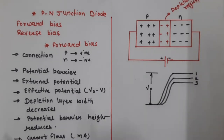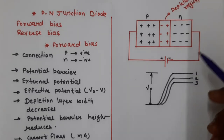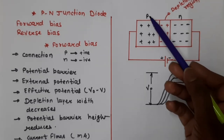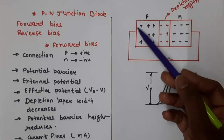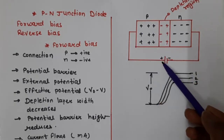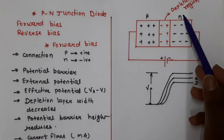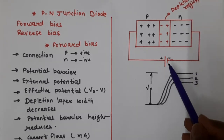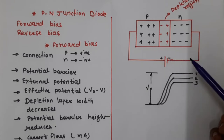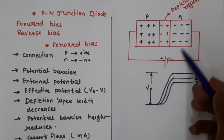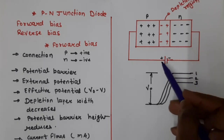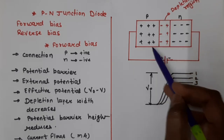In forward biasing, the P-type semiconductor is connected to the positive terminal of the battery and the N-type semiconductor is connected to the negative terminal of the battery.